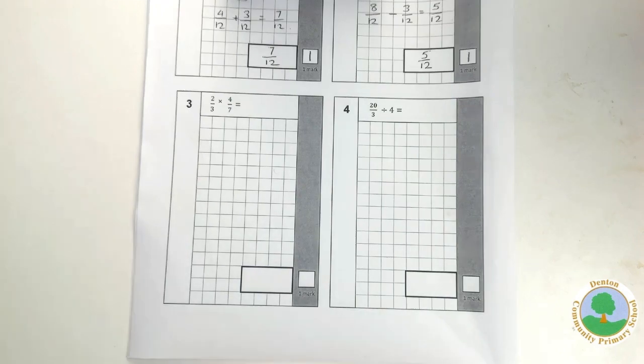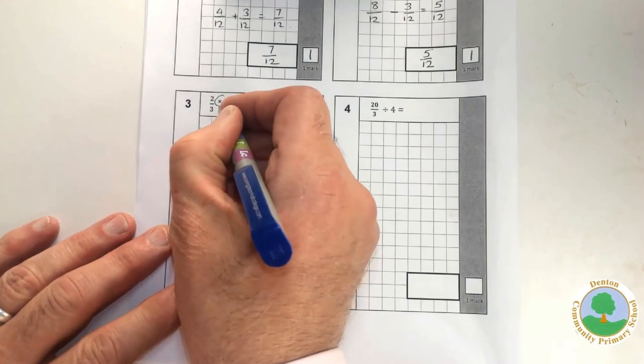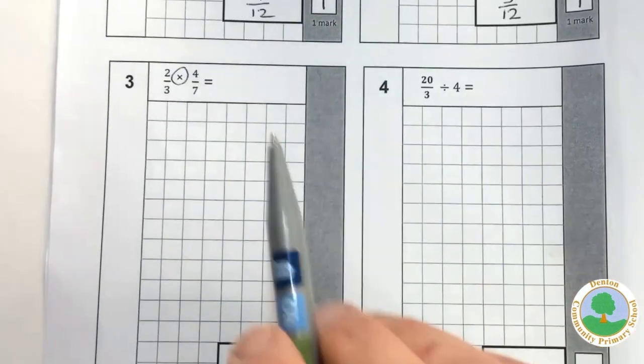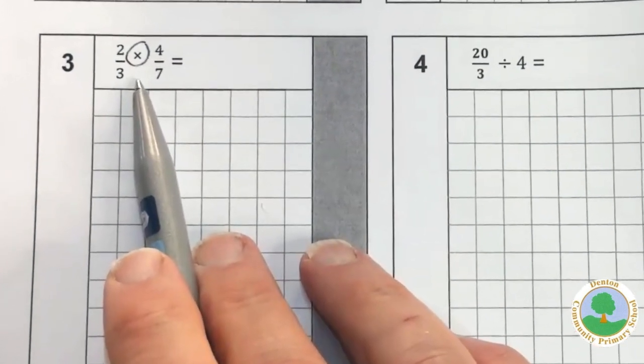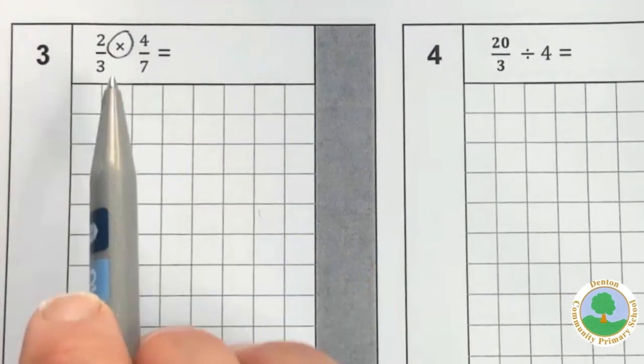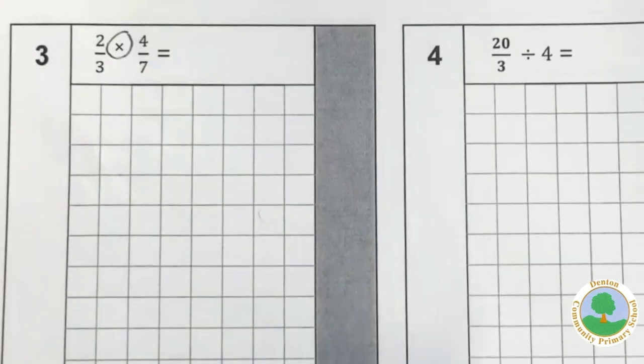OK, let's go on to number three, multiplication. Now, the good news is, with fractions, multiplication is arguably easier than addition and subtraction because we don't need to worry about whether the denominators are the same. We're simply multiplying.